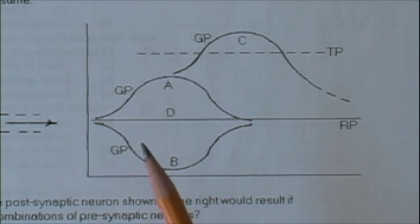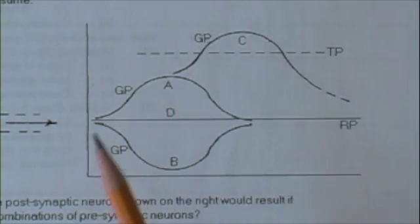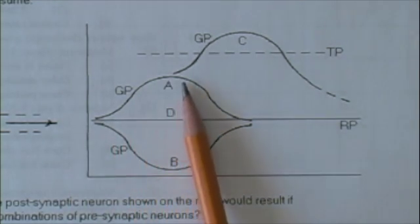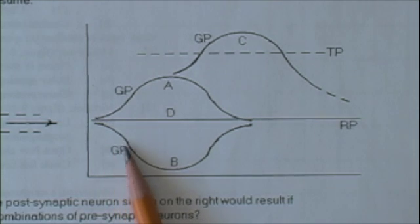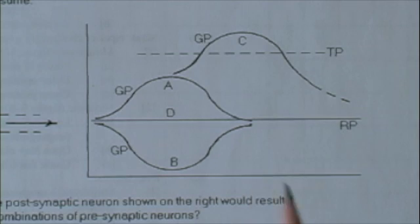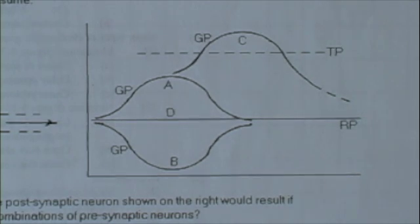What if the nerve impulse arrives along one and three? Well, number one is excitatory, it tries to do this. Number three is inhibitory, it tries to do this, and they cancel each other out, and there's no change. No nerve impulse is generated in the postsynaptic neuron. Same thing is true if it arrives along number two and number three.